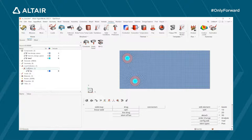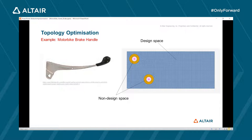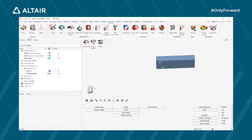Create a new load collector named 'Pressure' with a new color. We want to apply pressure around a specific region at the top of the handle. To calculate the pressure, we need an area. Hiding elements to isolate the region, we measure approximately 10 millimeters width and 80 millimeters length, giving an area of 800 square millimeters. With a desired force of 250 Newtons divided by 800 square millimeters, we get a pressure of 0.3125 Newtons per square millimeter.